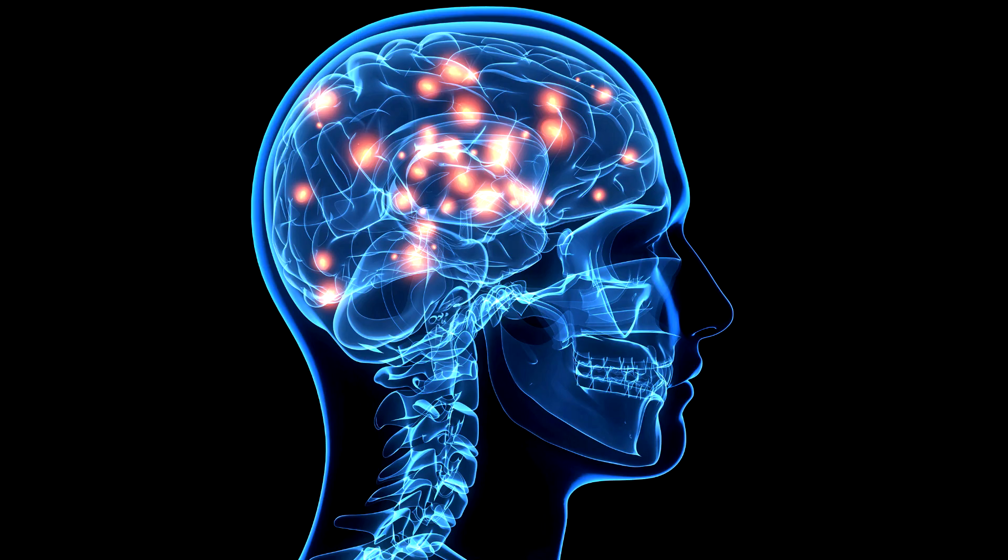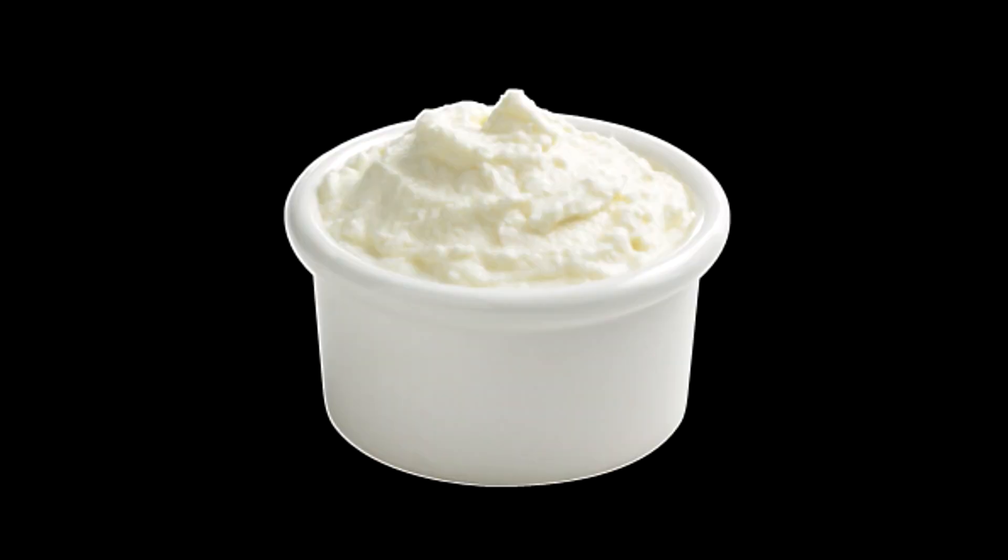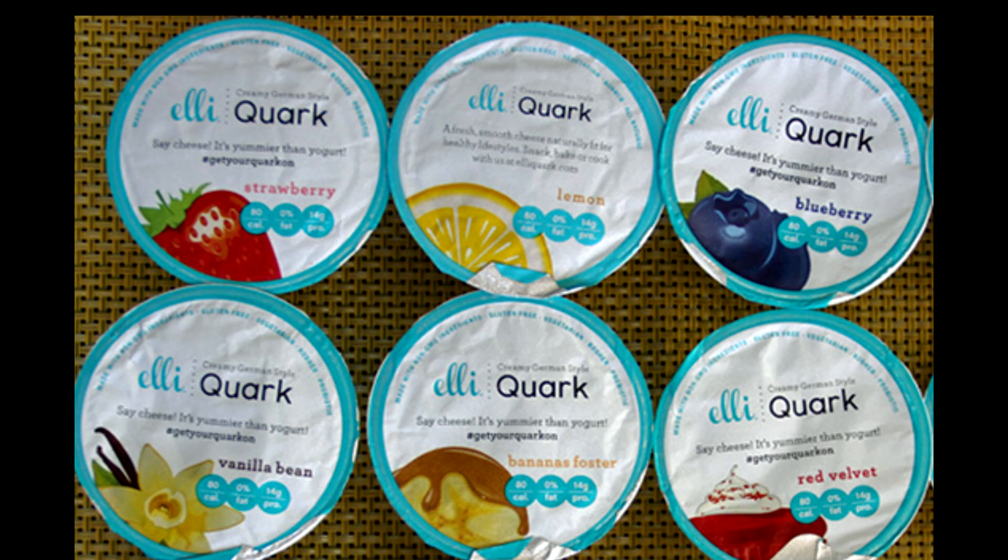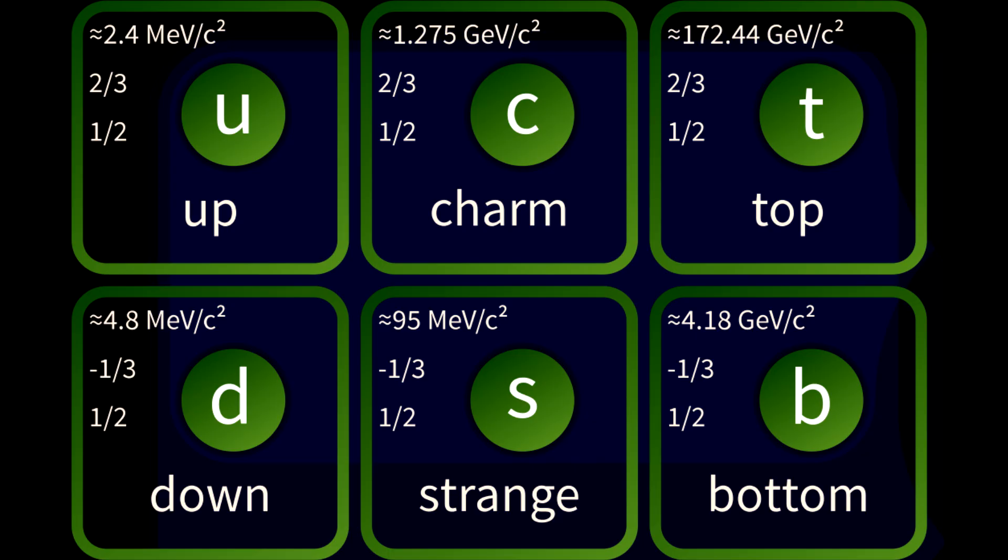To understand how, let me introduce you to quarks. Quarks are subatomic particles. There are six different flavors of quarks: up, down, top, bottom, strange and charm quarks.